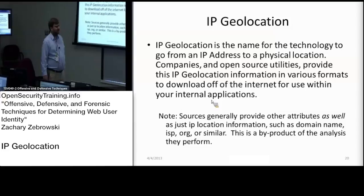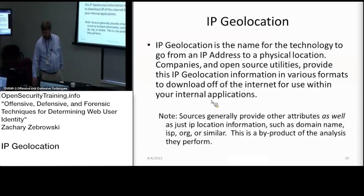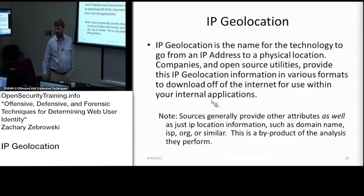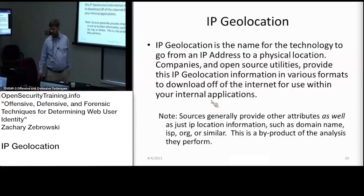So you aren't really notifying who you're trying to look at that you're interested in them. Generally speaking, the IP geolocation sources provide other attributes as well as location information. That's because the way they figured out the location also means they have other secondary attributes which they include. You generally find more secondary attributes with commercial providers than with the open source ones.